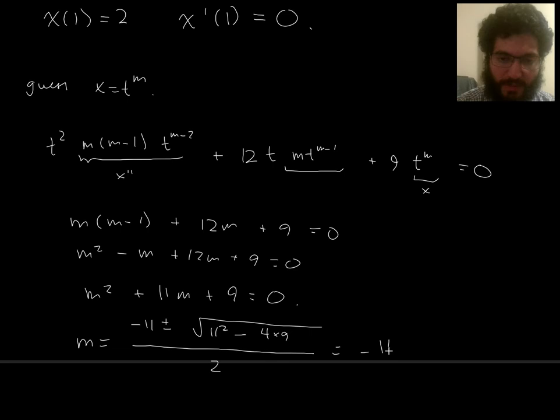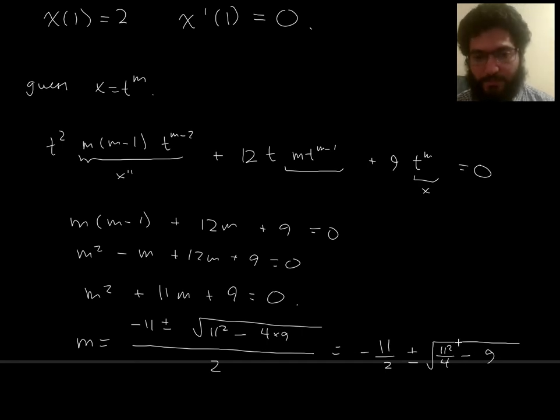So negative 11 halves plus or minus the square root of 11 squared over 4 minus 9. And I'm pretty sure 11 squared over 4 minus 9 is positive, so it looks like I am in case 1, the two real roots case.